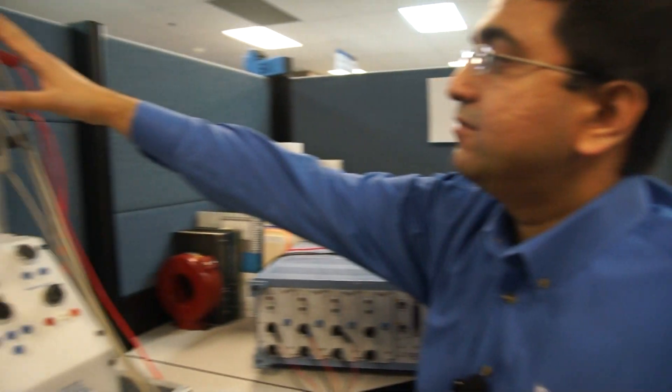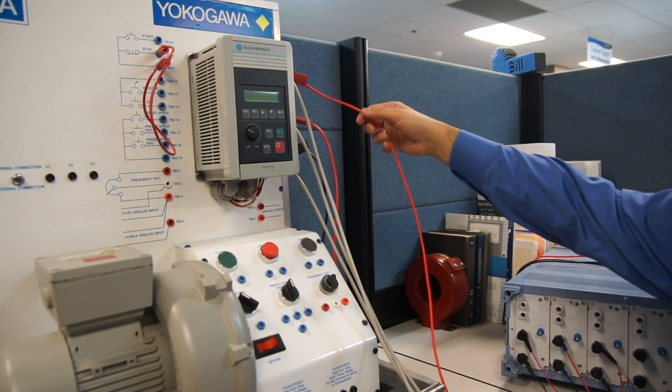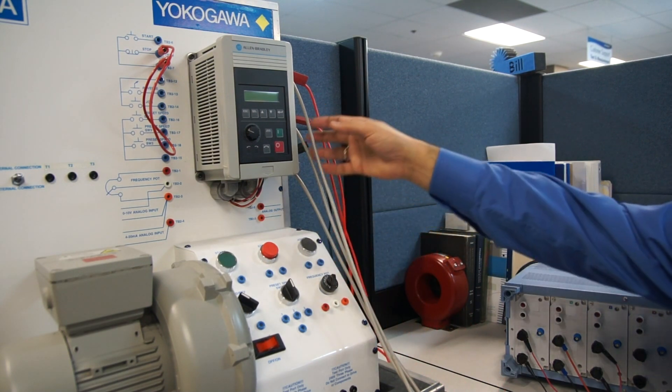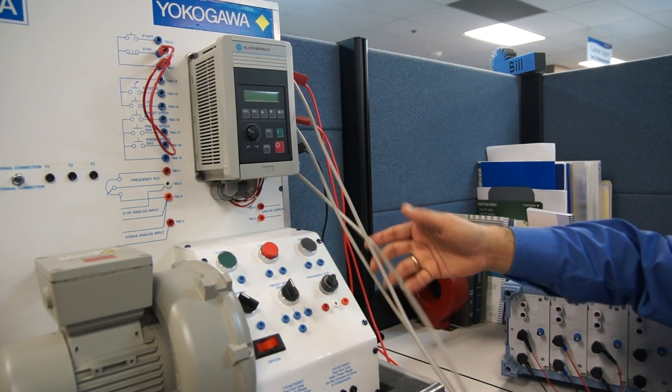What I have here is a three-phase three-wire circuit which is a motor drive. I have my three-phase voltages coming out: phase A, phase B, and phase C voltages. I also have my phase currents coming out: phase A current, phase B current, and phase C current.